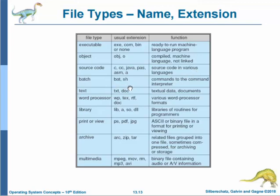Word processor files commonly use .doc, .docx, .wp, .rtf, or .txt. Review these basic file types and name extensions so that you will be familiar with different file types in an operating system.